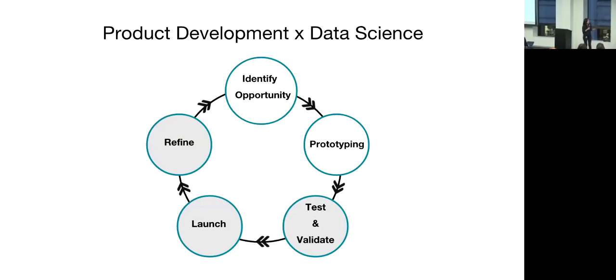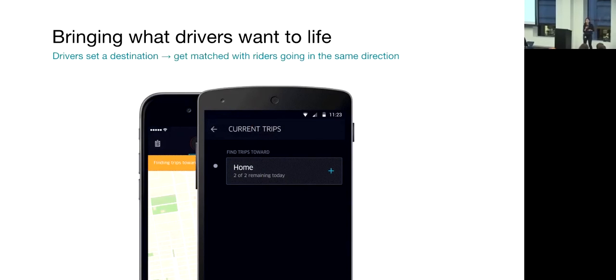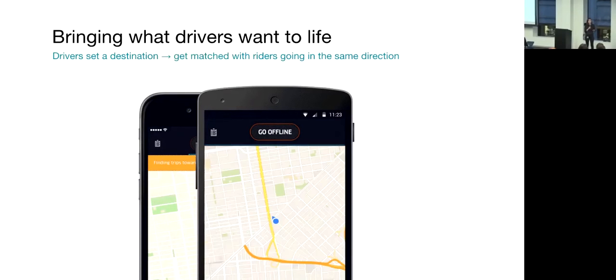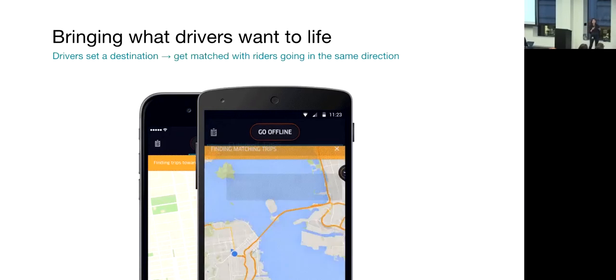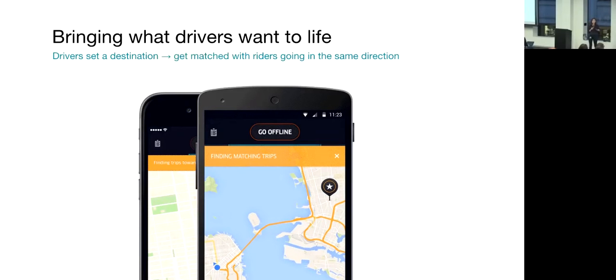So driver destinations. This is a feature that is actually globally launched. I'm going to be focusing mostly on the work that we did during launch and post-launch, but I'll also briefly talk about some of the work that we did early in the product development lifecycle. So first of all, what is driver destinations? Driver destinations allows drivers to set a destination and then will match drivers with trips that are along their way.